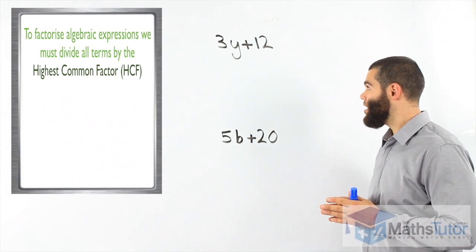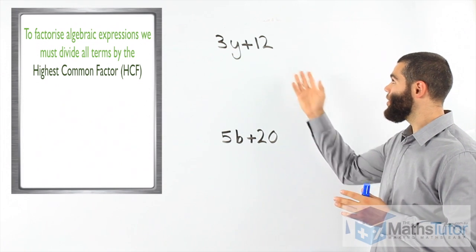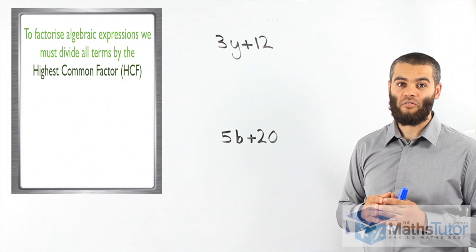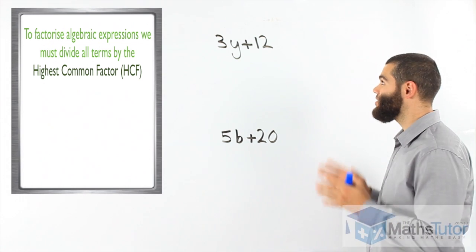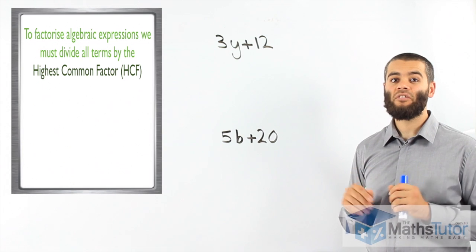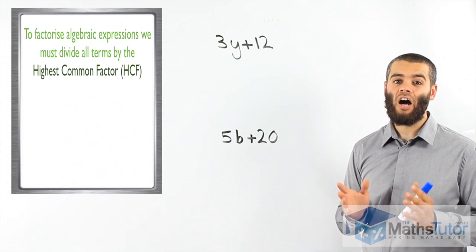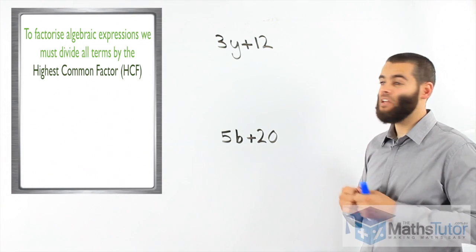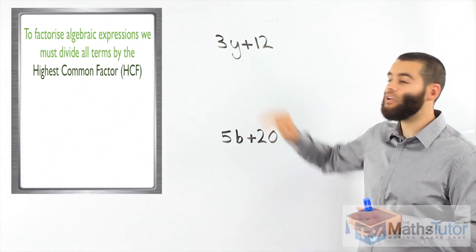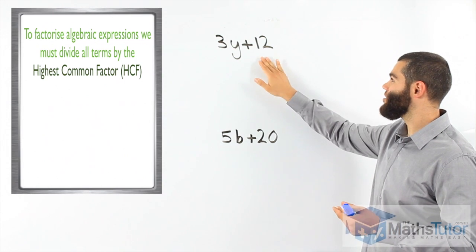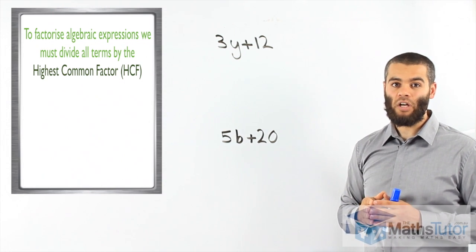We look here and we have 3y plus 12. And the question says, factorise. Factorise meaning, look for the highest common factor. The highest common factor in 3y and the highest common factor in 12.